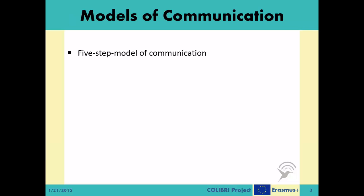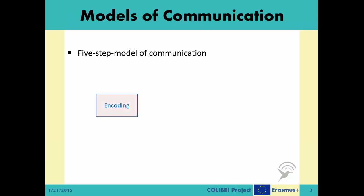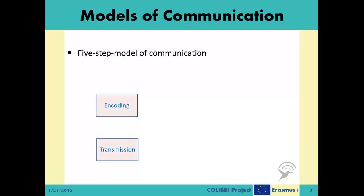Let us begin with defining a generic model for communication to which many communication systems follow. Note that this model is not the only model available for defining communication systems, just one of the most used ones. In this generic five-step model, the system is divided into five main steps: encoding, transmission, channel, reception, and finally, decoding.